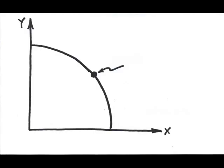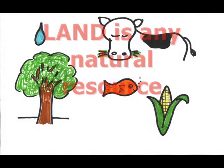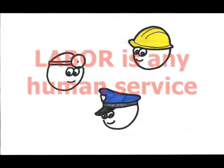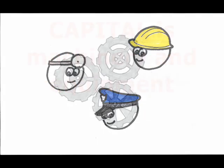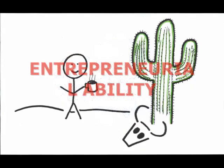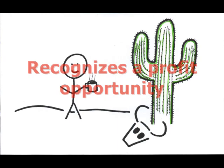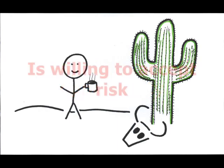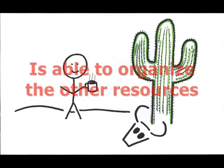Just as a quick recap, what are the categories of resources? Remember, land is any natural resource, labor is any human service, capital, which is not money, is machinery and equipment, and the last category is entrepreneurial ability, where the entrepreneur is someone who, one, recognizes a profit opportunity, two, is willing to accept risk, and three, is able to organize the other resources.